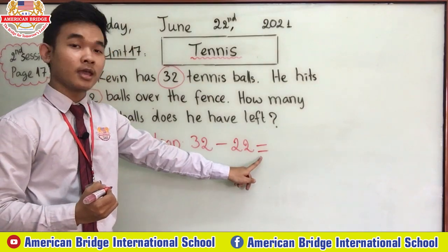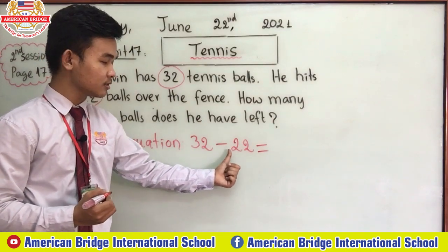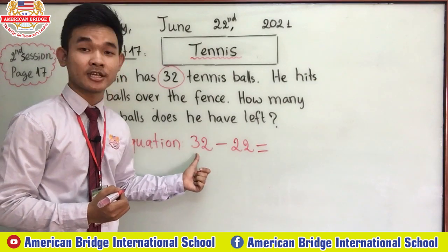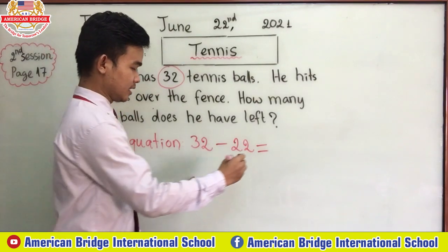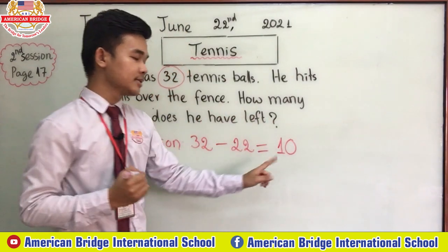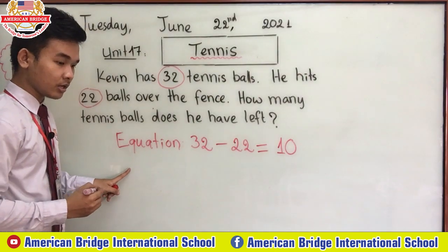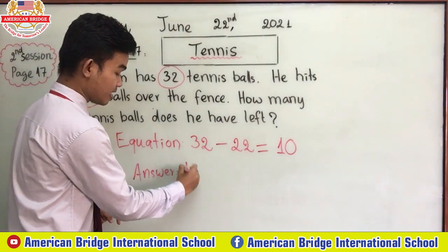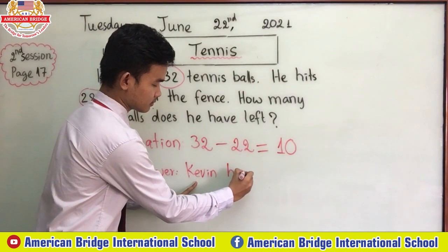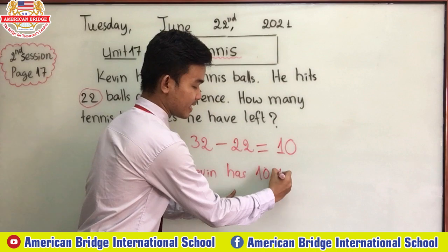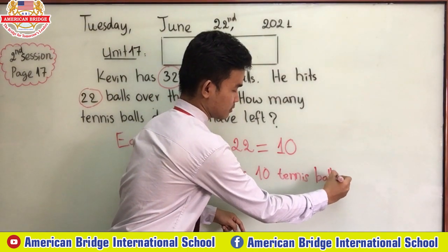How many everyone? After you subtracted these two numbers, how many are left? If you do this subtraction you will see 10 left. Did you understand everyone? Our answer is: Kevin has 10 tennis balls left.